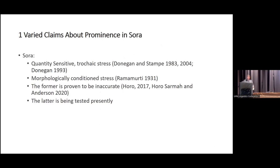Various claims have been made about Sora in the past. Most famously, a series of papers by Donegan and Stamp claimed that Sora was a quantity-sensitive trochaic stress system. Ramamurti — who remains the best description of the language, from 1931 — claimed morphologically conditioned stress, or morpholexical conditioning. The quantity-sensitive trochaic stress pattern has proven to be inaccurate based on instrumental phonetic data, and we are currently testing the second hypothesis.